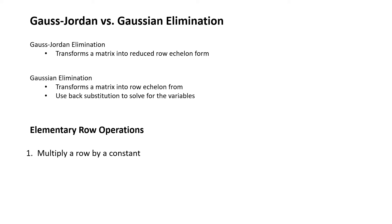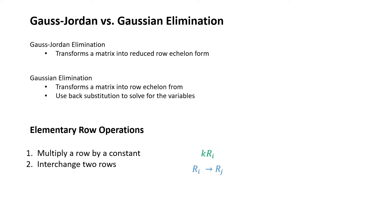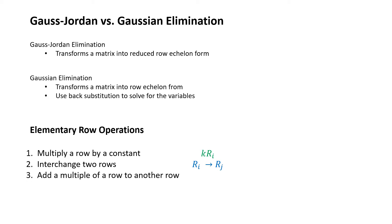Number one: multiply a row by a constant. Two: interchange two rows. And three: add a multiple of a row to another row.